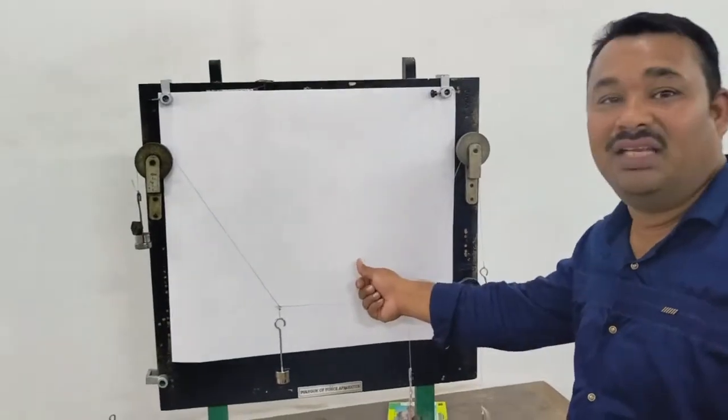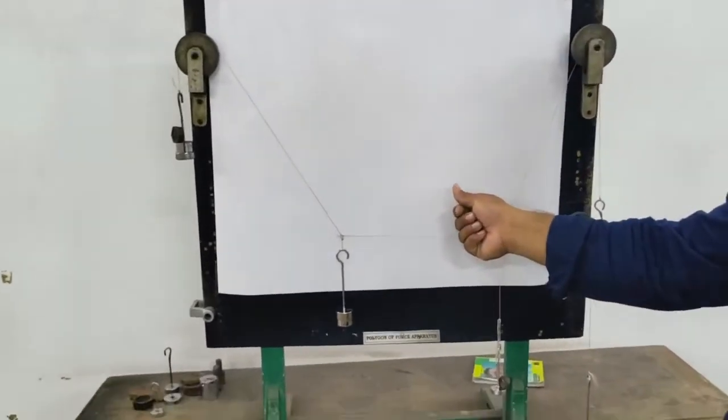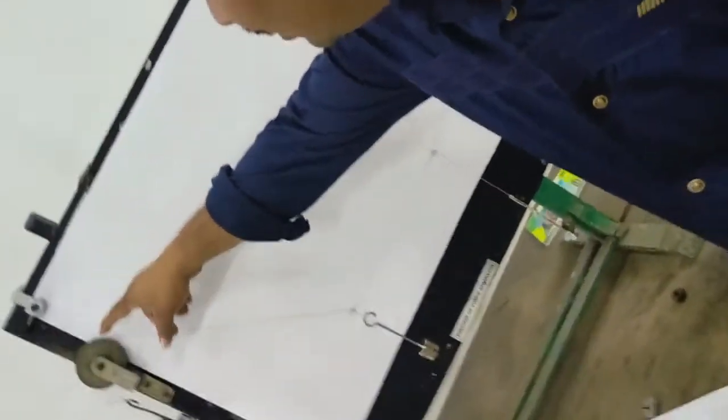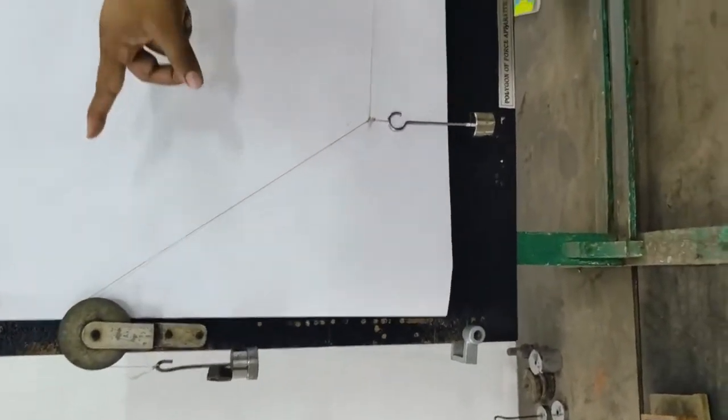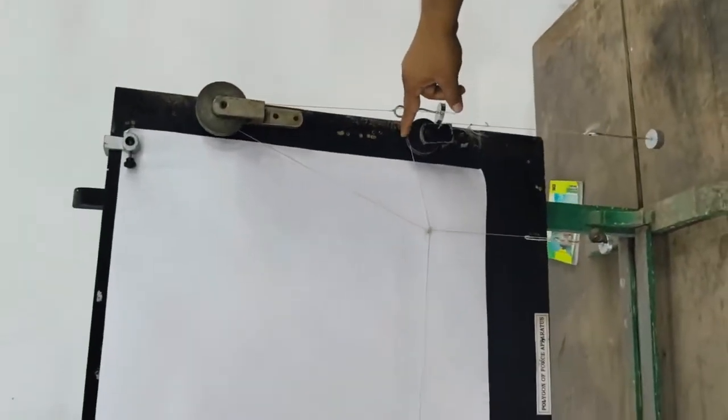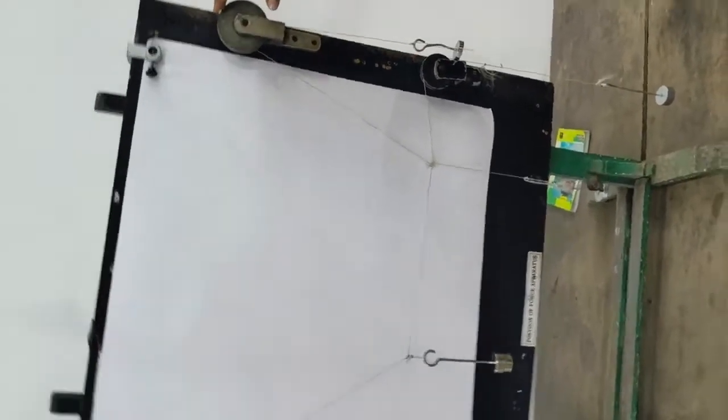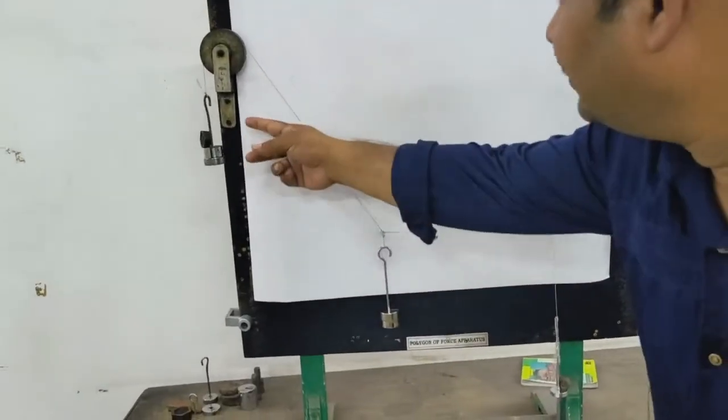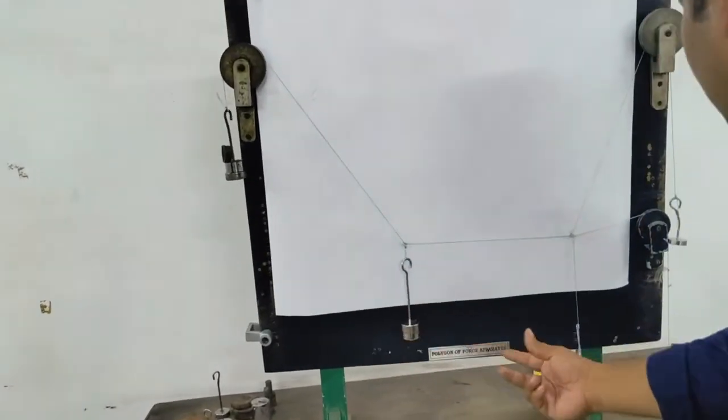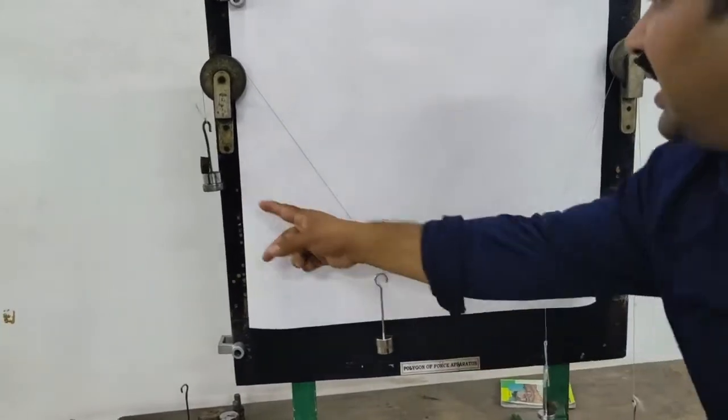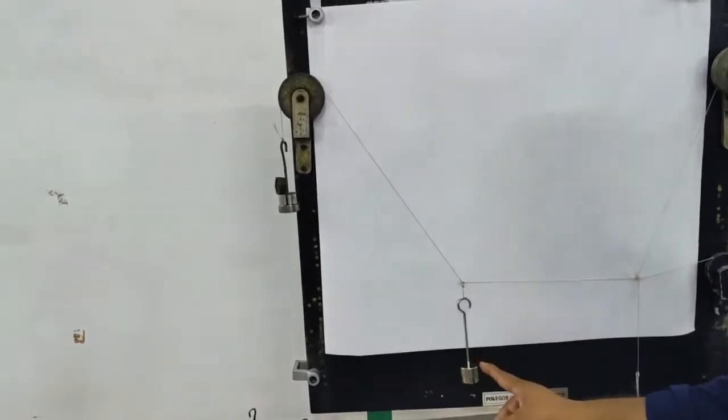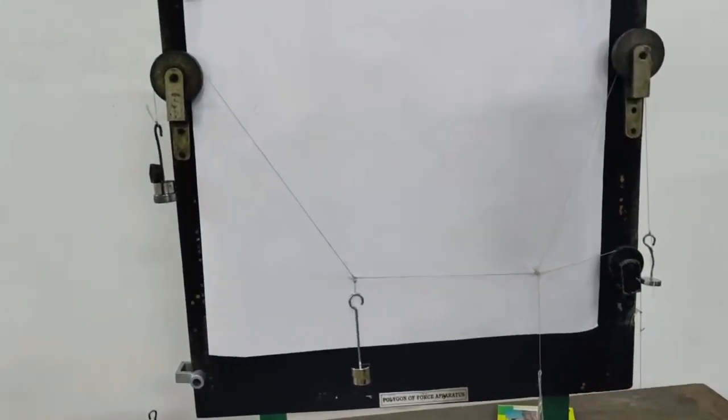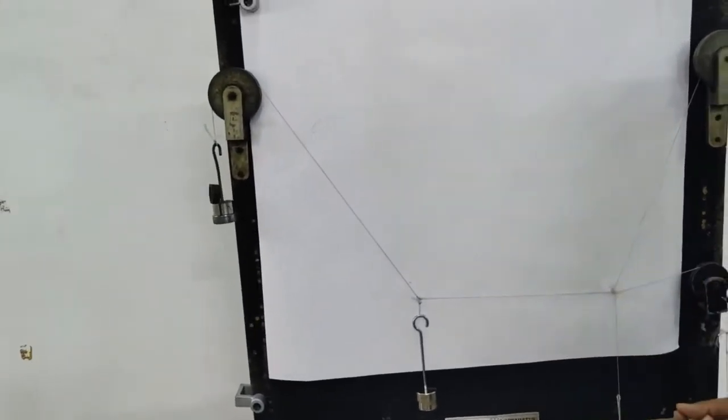We have the arrangement for this experiment. One can see there are three pulleys. The loads are hanging here with the help of hangers. So in this way, five forces are there.